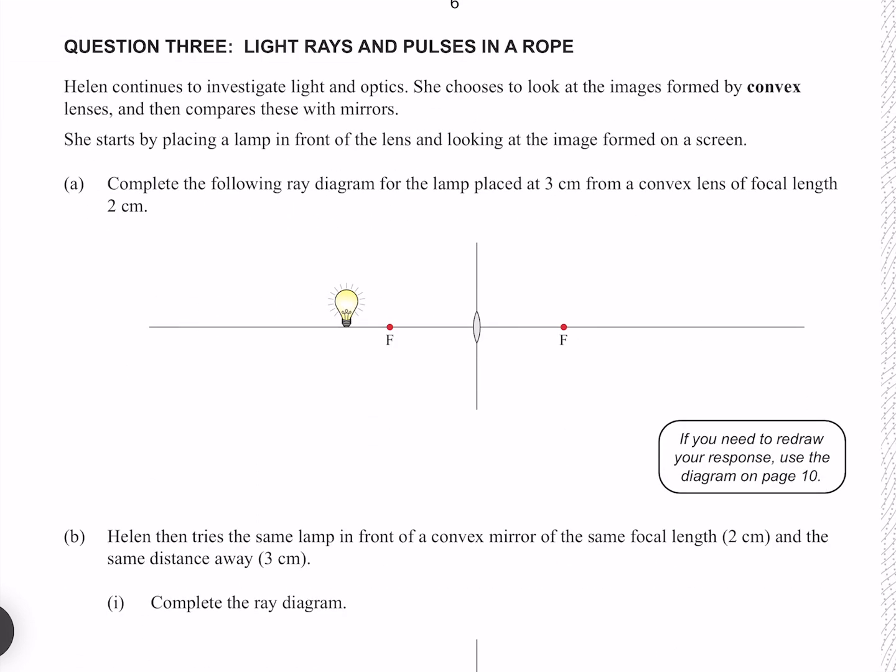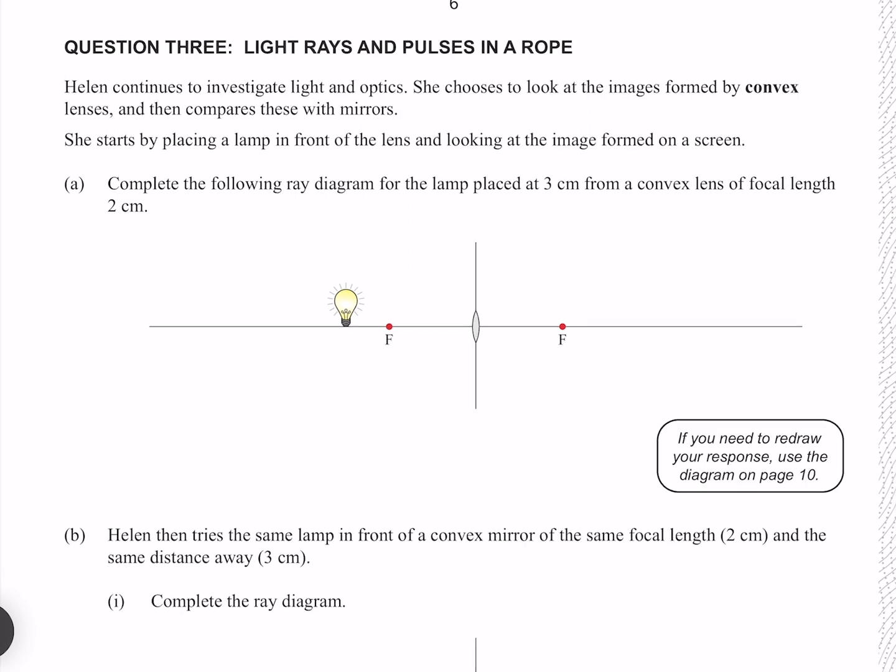Question 3. Helen continues to investigate light and optics. She chooses to look at the images formed by convex lenses and then compares these with mirrors. She starts by placing a lamp in front of the lens and looking at the image formed on a screen. Complete the following ray diagram for the lamp placed at 3cm from a convex lens of focal length 2cm.